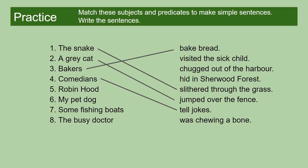A fence you can touch, grass you can touch, bread you can touch and hold and smell and see — but jokes you can't. So 'jokes' is an abstract noun, but it's still a noun, because you can put an article in front of it: 'the jokes.' That's how you know it's a noun.